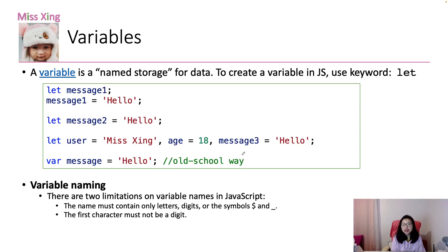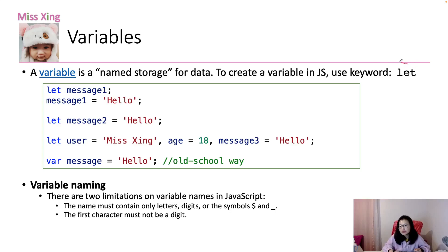And to create a variable inside JavaScript, we are using the keyword 'let'. This keyword was added in ECMAScript 6 — that's the version, ES6.